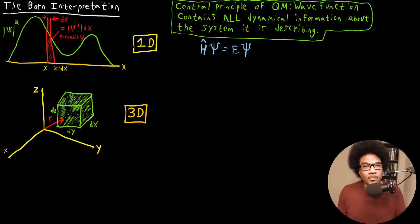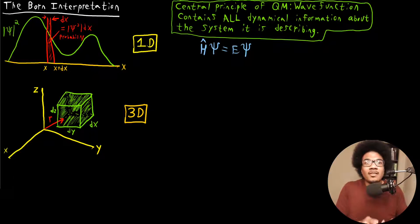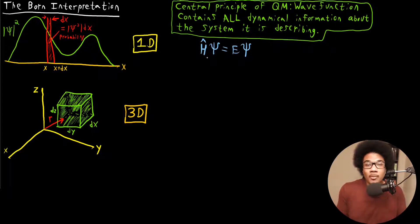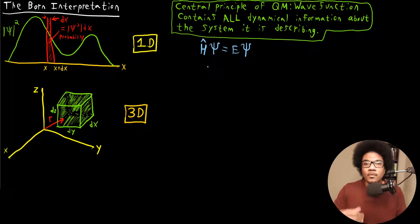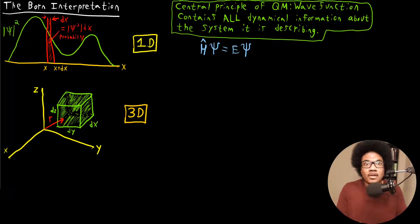The central principle of quantum mechanics is that the wave function contains all of the dynamical information about the system that it is describing. The Hamiltonian contains operators that are related to the energy of the system, and the wave function contains all the dynamical information, including — and I think most principally — the particle's location. And that's what we're going to focus on here with the Born interpretation: how do we figure out from a wave function where a particle is located in space?